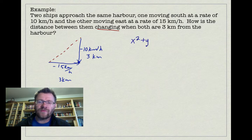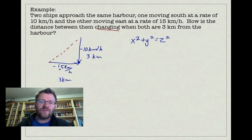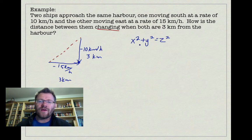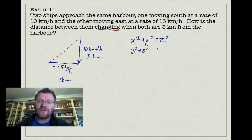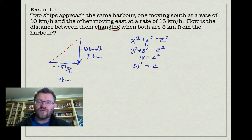We can use the Pythagorean theorem, written as x² + y² = z², where x and y are the horizontal and vertical distances and z is the hypotenuse. Right now this is just a distance equation. Using the given values: 3² + 3² = z², so 9 + 9 = 18 = z², meaning z = 3√2 kilometers. It's important to keep this exact rather than converting to a decimal.